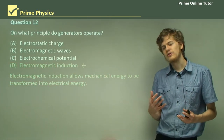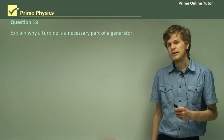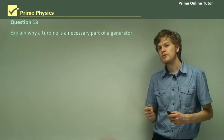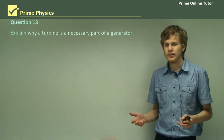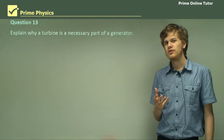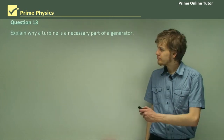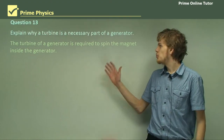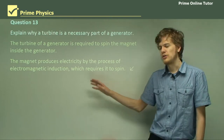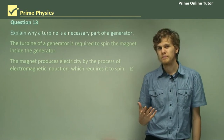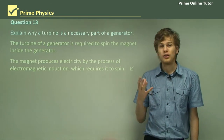Question 13: Explain why a turbine is a necessary part of a generator. What we need to do is spin a magnet. The turbine of a generator is required to spin the magnet inside the generator, and the magnet is what produces electricity by the process of electromagnetic induction, which requires it to spin. We can see just from the name 'electromagnetic induction' that it has to do with both electricity and magnets.